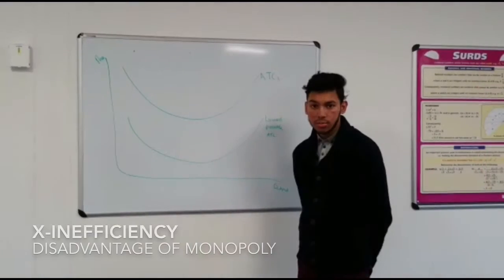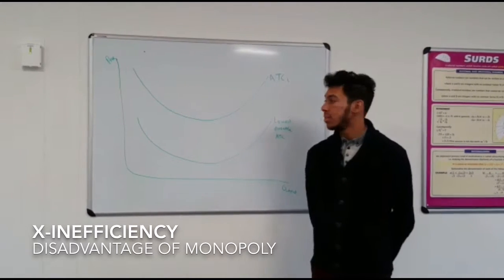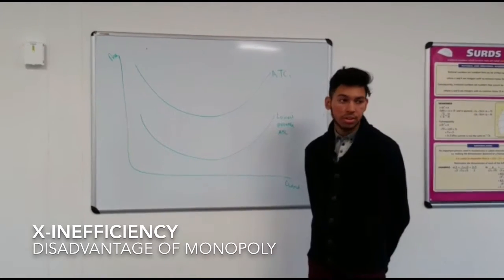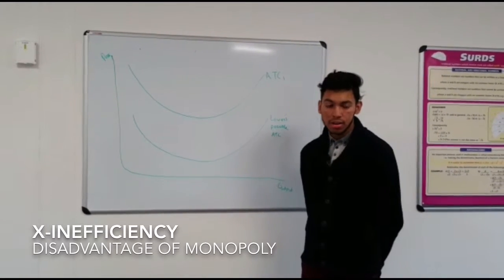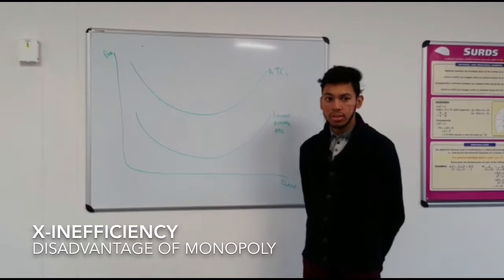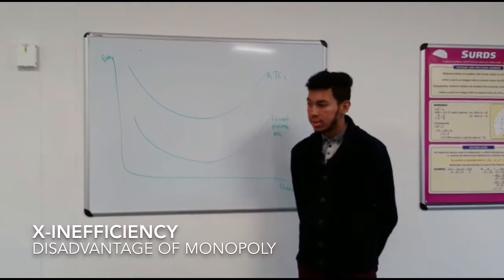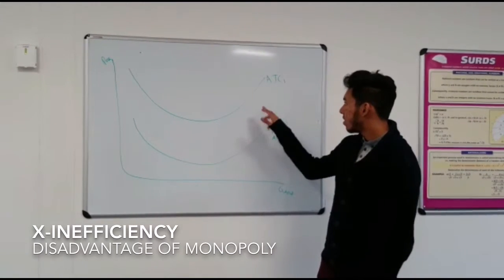X-inefficiency occurs when more inputs are used than necessary for a given level of output. This occurs when there is a lack of effective competition, which is evident in monopolies as one firm dominates the market. For example, this can lead to wastage and duplication. Rather than producing at the lowest possible ATC curve, they actually produce at ATC1.